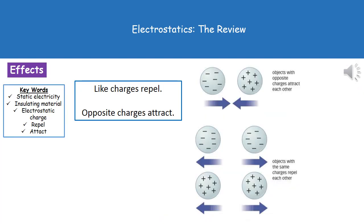The last thing we need to understand is what happens with those charged objects. If we've got opposite charges — so one positive and one negative — the opposite charges will attract each other. However, if we've got like charges, meaning the charges are the same — so two negatives or two positives — then they will repel each other.